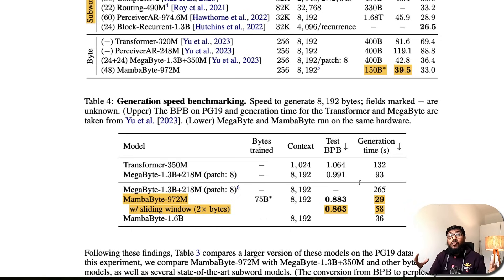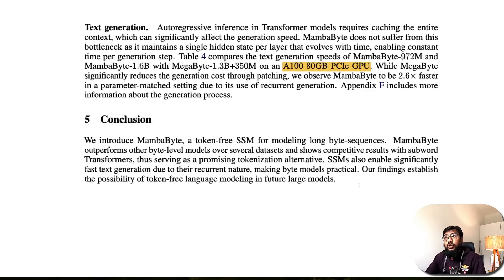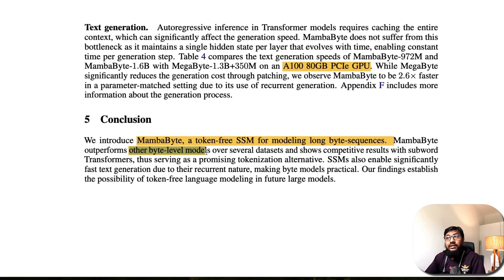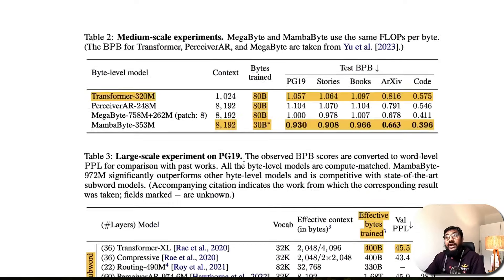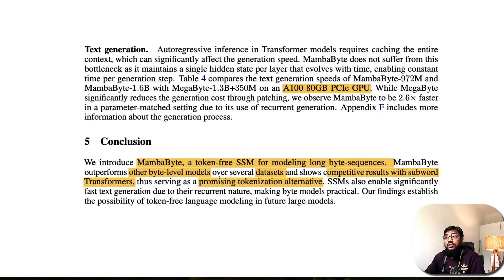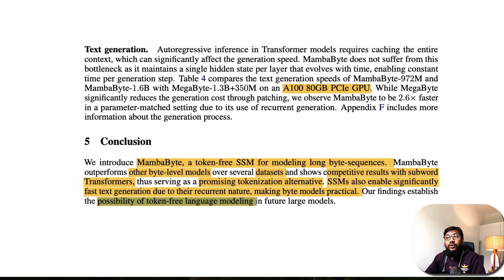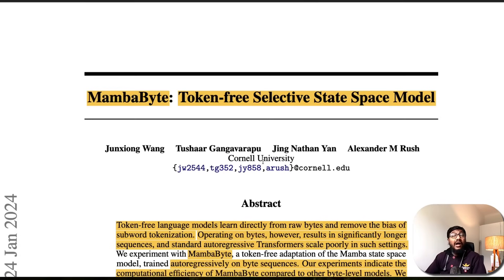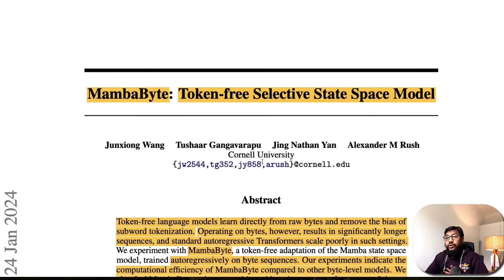In summary: the paper introduces MambaByte, a token-free SSM for modeling long byte sequences. MambaByte outperforms other byte-level models across several datasets and shows competitive results with subword Transformers, serving as a promising token-free alternative. SSMs also enable significantly faster text generation due to their recurrent nature, making byte-level models more practical. The paper establishes the possibility of token-free language modeling in future large models. I really appreciate this paper and hope it turns into a publicly available model — until then, happy prompting!